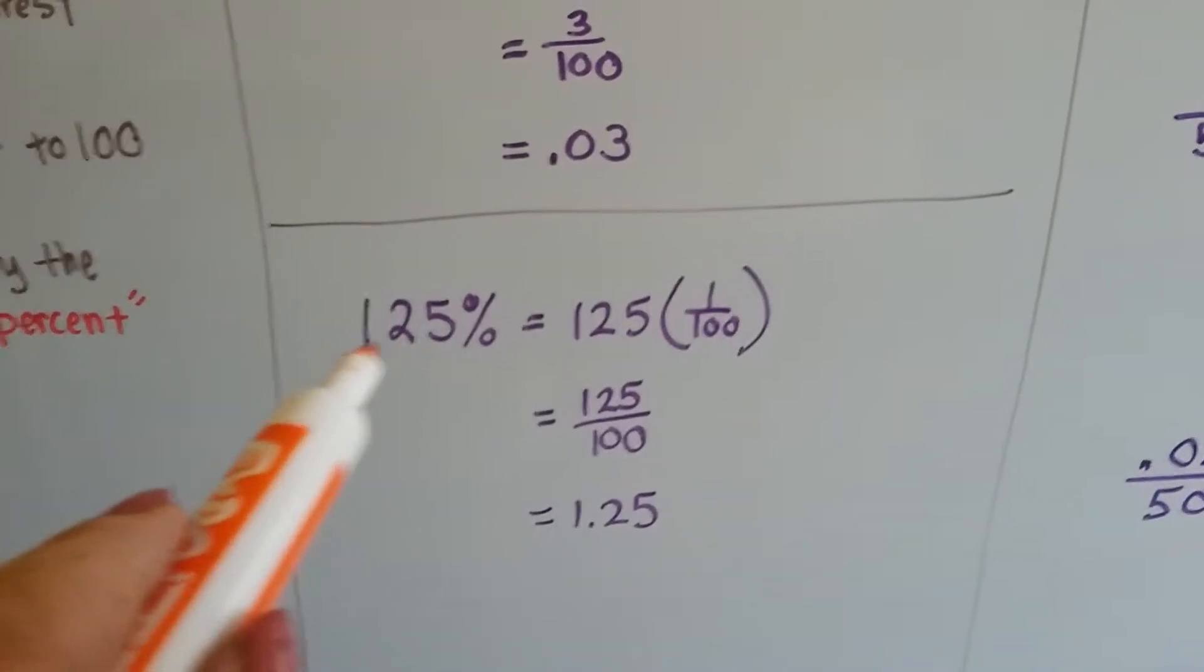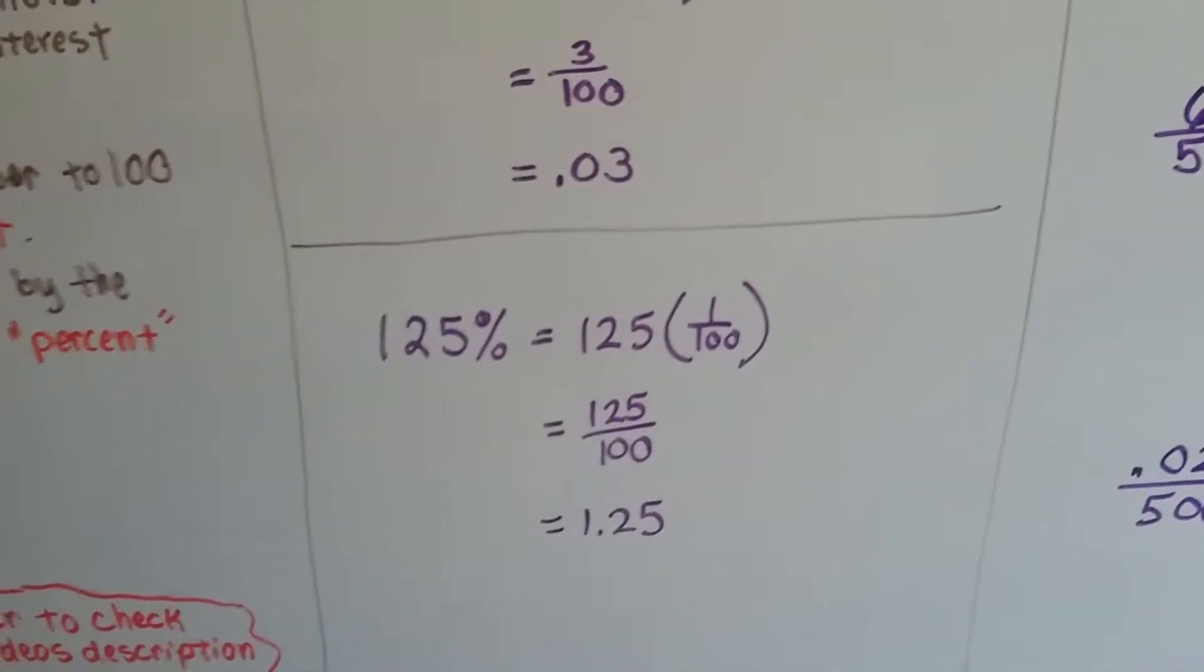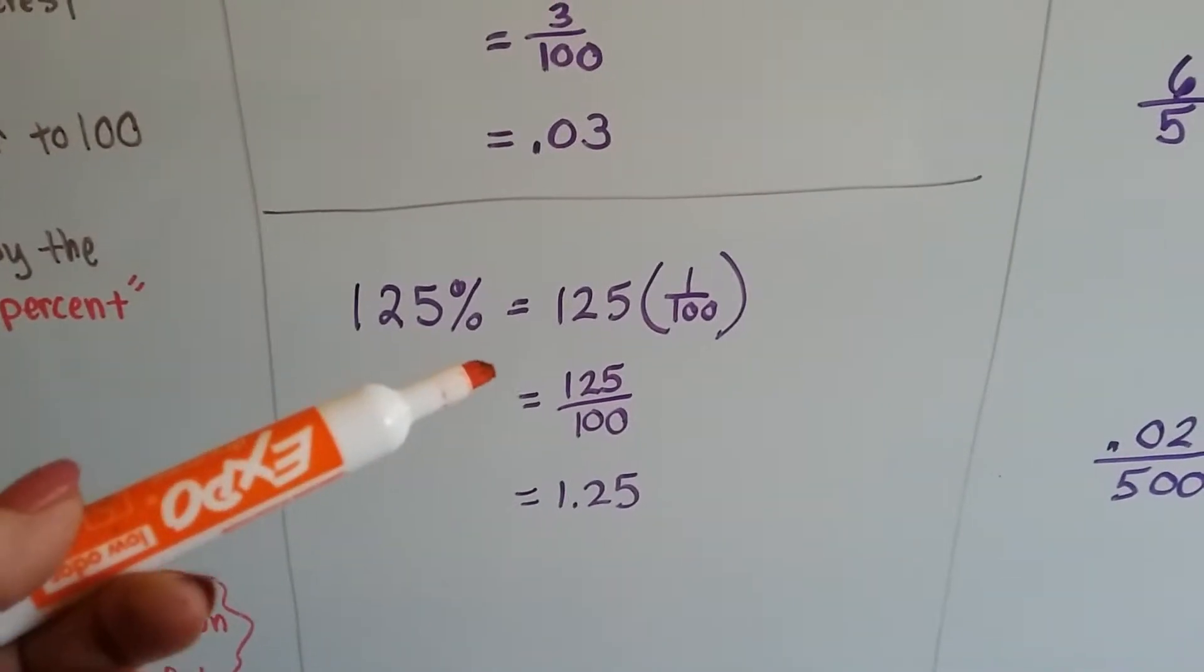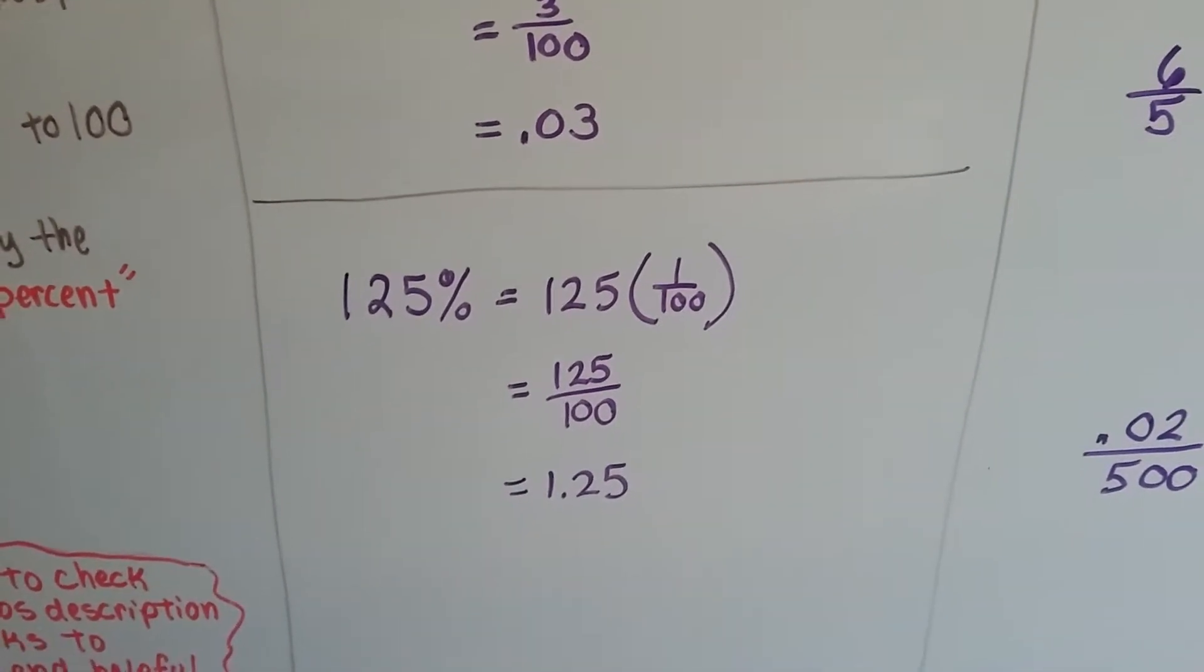If you see three digits like 125%, that's 125 times one one-hundredth. So you have 125 over 100, which means you have 1.25.